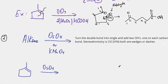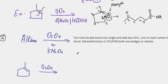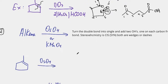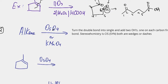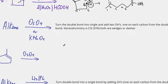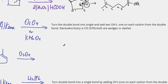Now let's learn another reaction: alkene with OsO4 or KMnO4. Depending on the college and professor, the reagents may vary slightly, so keep that in mind and look at the reagents your professor gives you. If I have an alkene with OsO4 or KMnO4, I turn the double bond into a single bond and add two OHs, one on each carbon from where the double bond was.